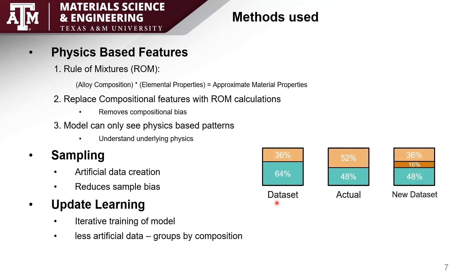On the left you can see we have a data set here which is 36% orange and 64% green. It's trying to replicate what you see in the center which is 52% orange and 48% green, but you can see there's a huge discrepancy in the percentages. What we do with artificial data creation is take a mean and standard deviation of what exists in the orange data and create random values to make that 16%, and this helps reduce our sample bias.